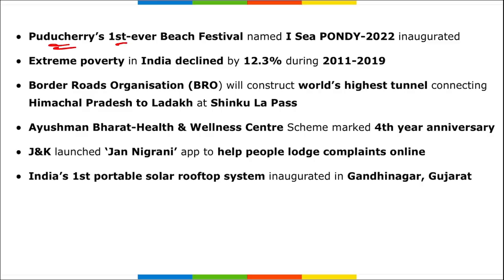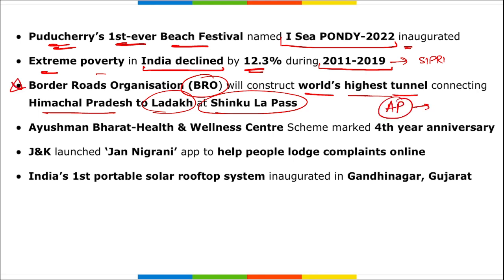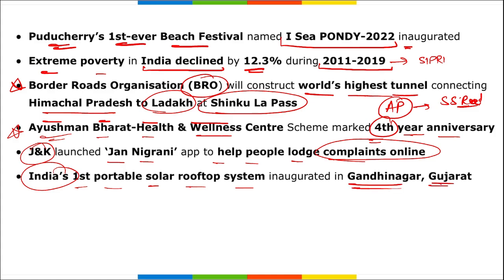Puducherry's first ever beach festival was named 'Ici Pondi' and inaugurated. Extreme poverty in India declined by 12.3% during 2011 to 2019 as per a CIPRI report. BRO will construct their highest tunnel connecting Himachal Pradesh to Ladakh at Shinkula Pass. In Arunachal Pradesh, BRO will be constructing their first steel slag road. Ayushman Bharat Health and Wellness Center scheme marked its fourth year anniversary. Jammu and Kashmir government launched the 'Jan Negra' app to help people lodge complaints online.